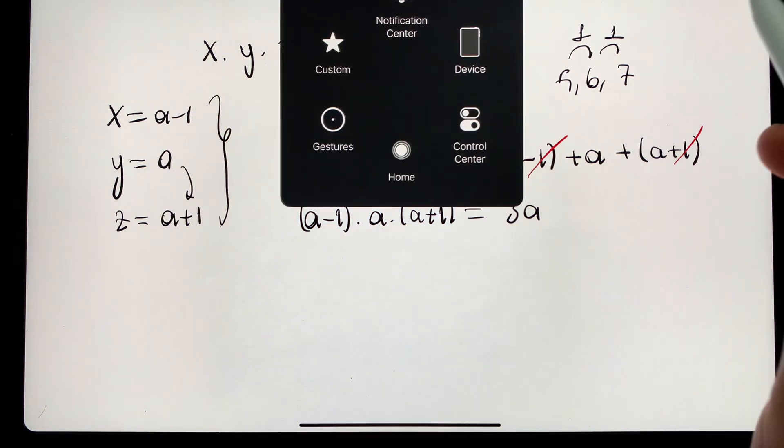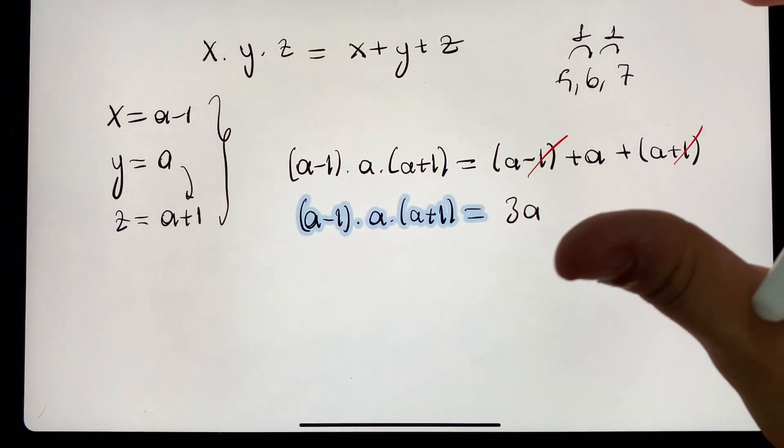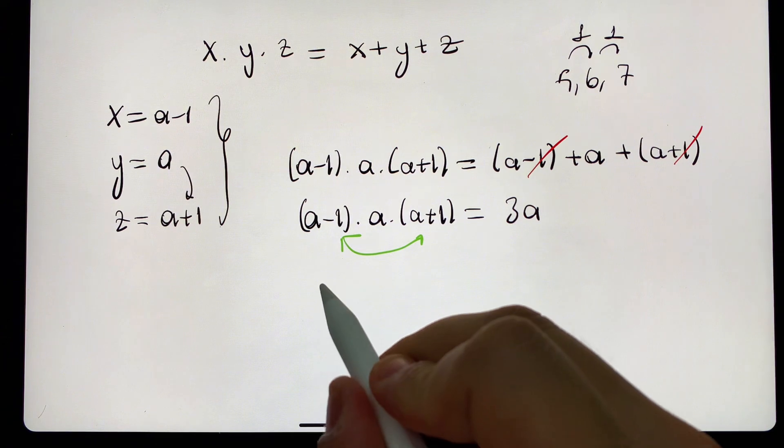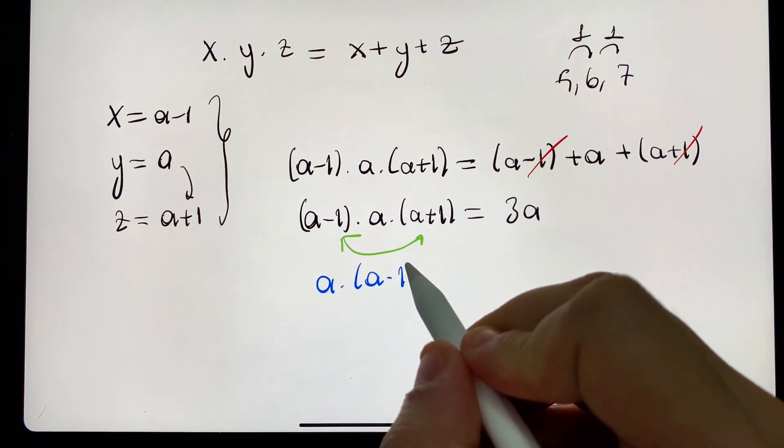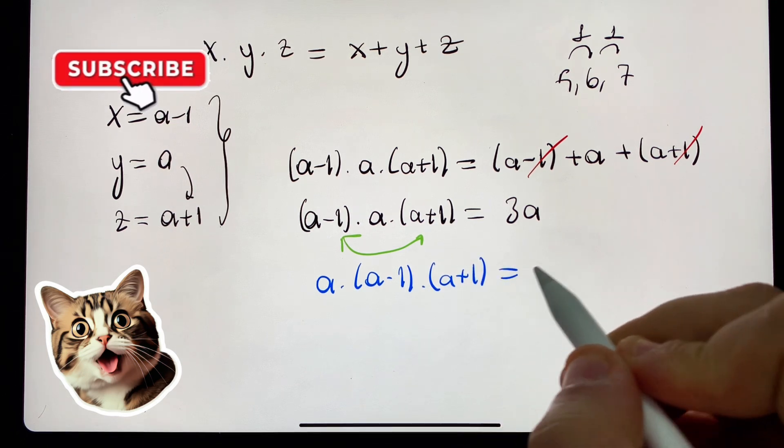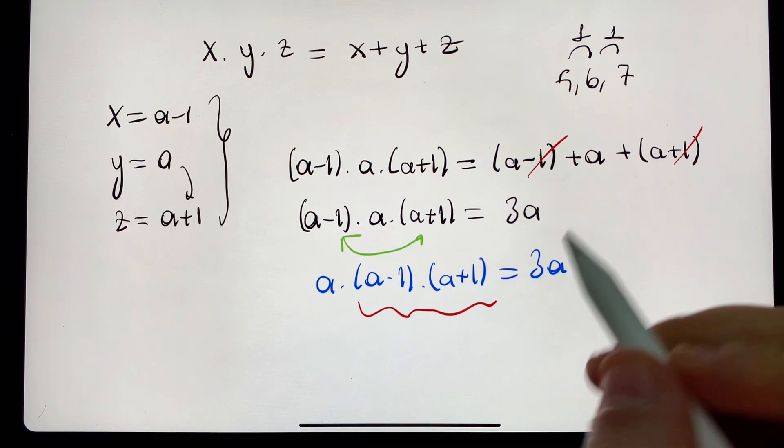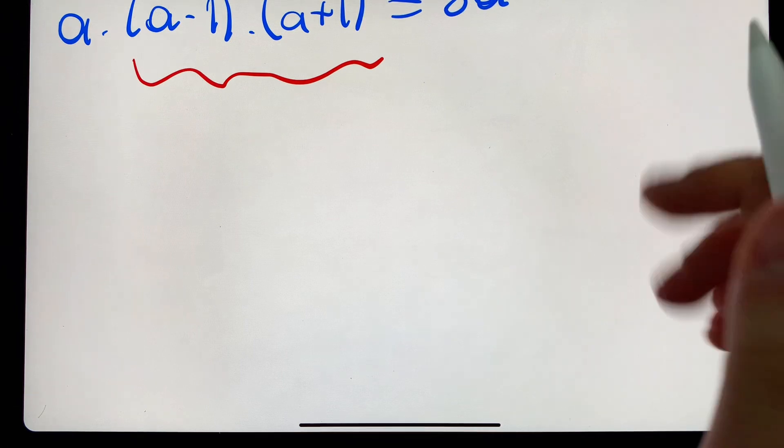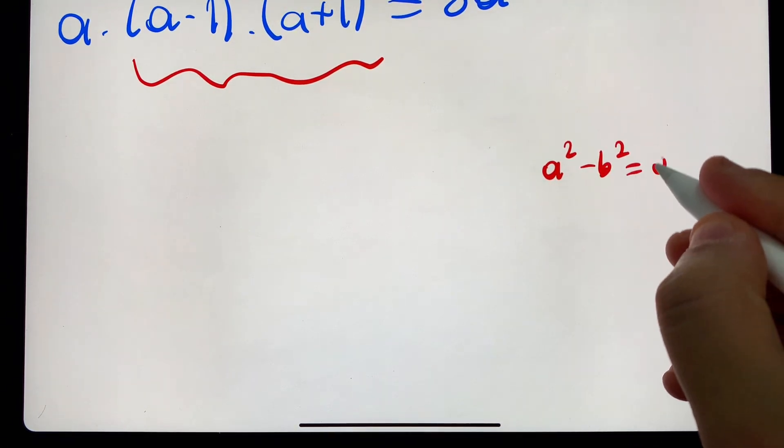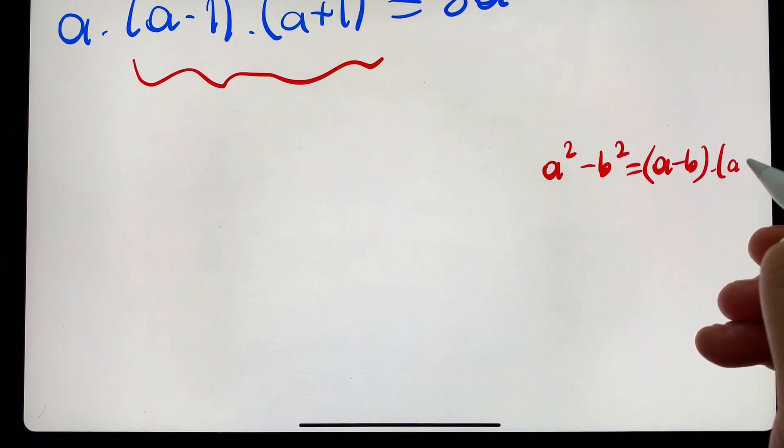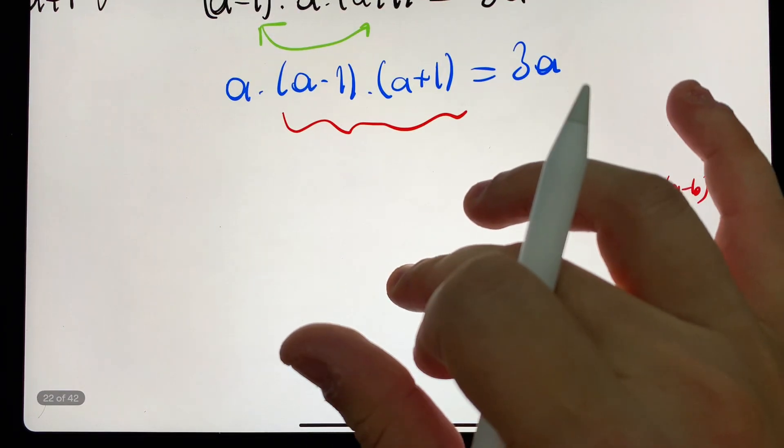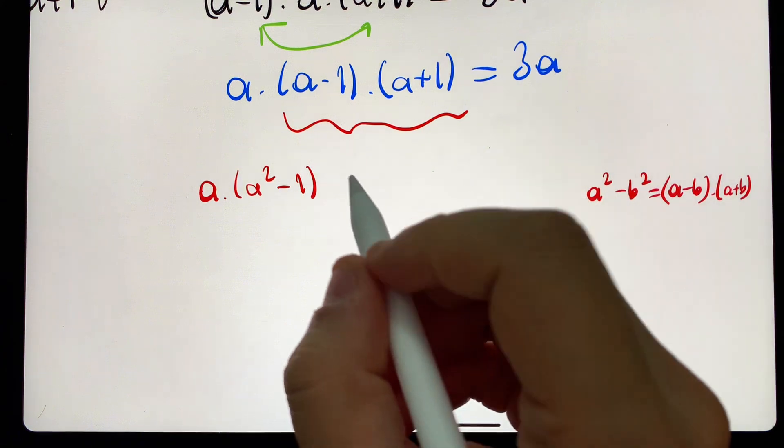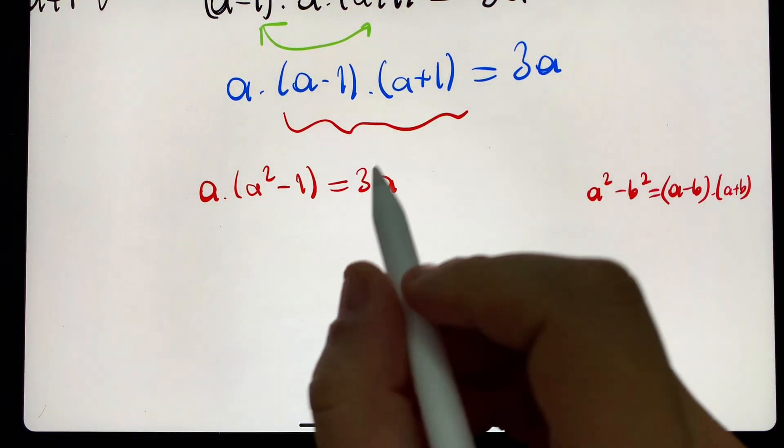What can I do later? Look at those 2 over there. If I change the places of these, what will this expression be? A times a-1 times a plus 1 is 3a. I think that expression sounds familiar to you. Yes, what was this expression? Difference of squares. Let's remember. What is the expression we call a squared minus b squared? A minus b times a plus b. Then if we bring it and apply it, a times a squared minus 1 in brackets equals 3a.